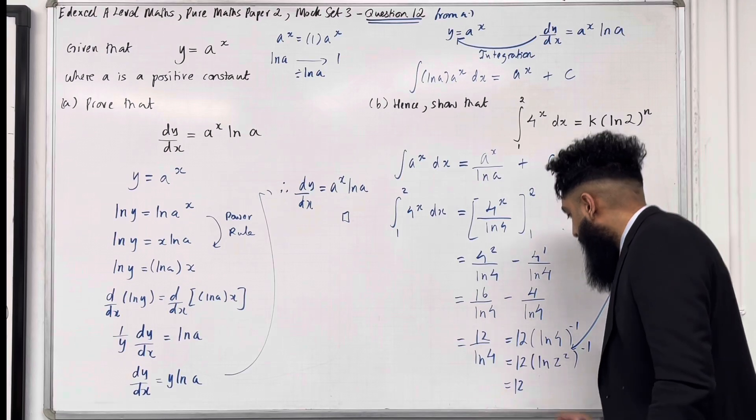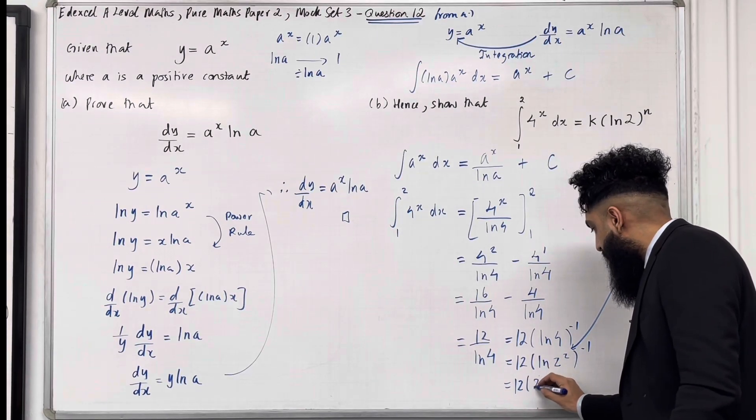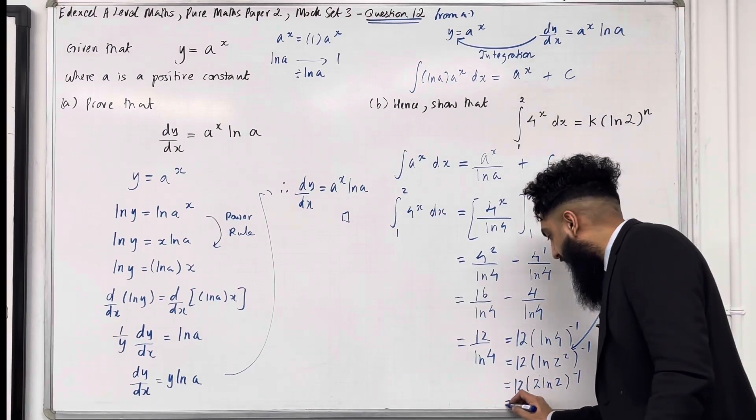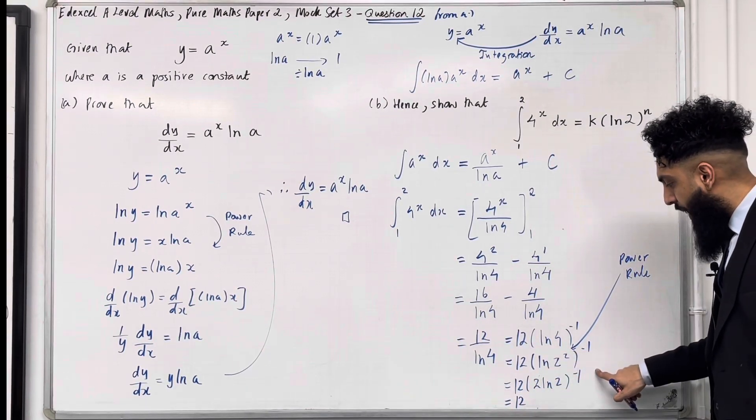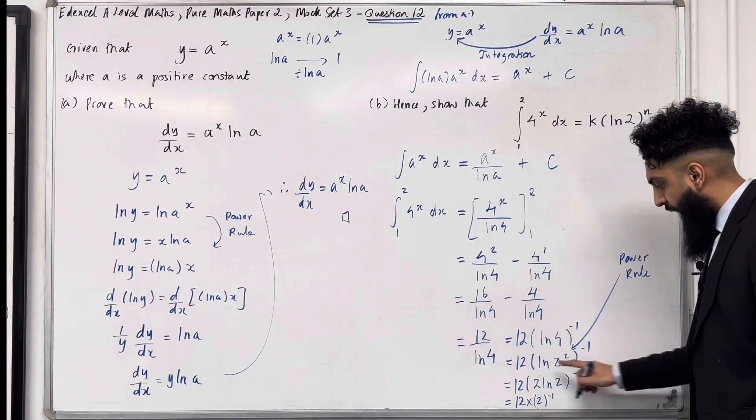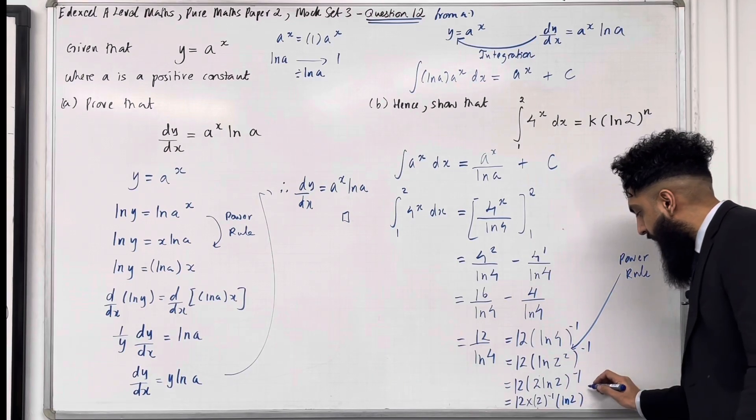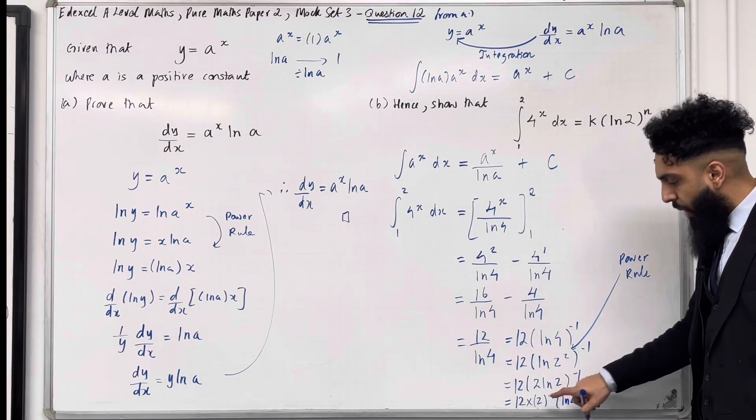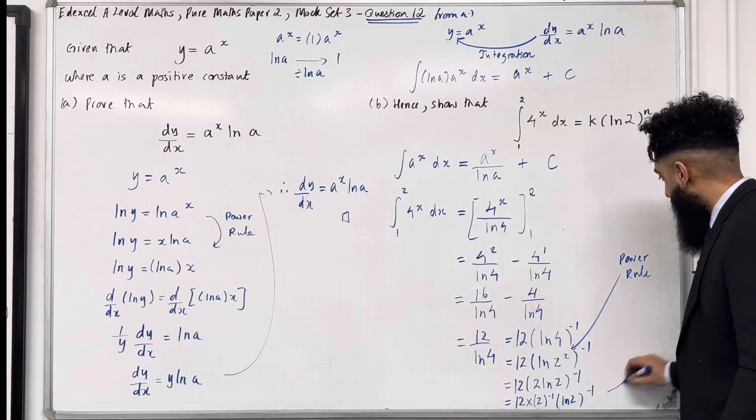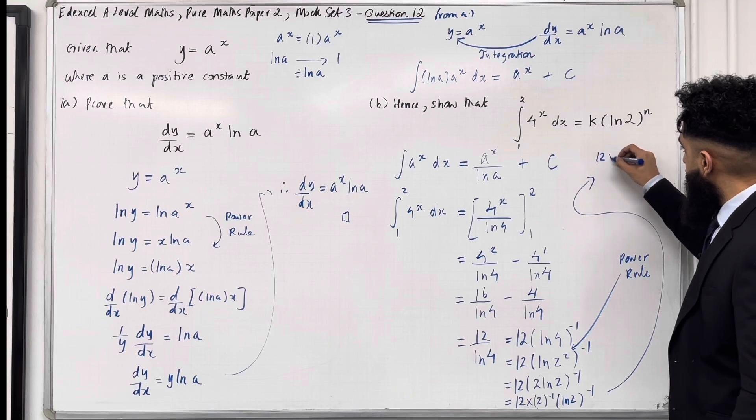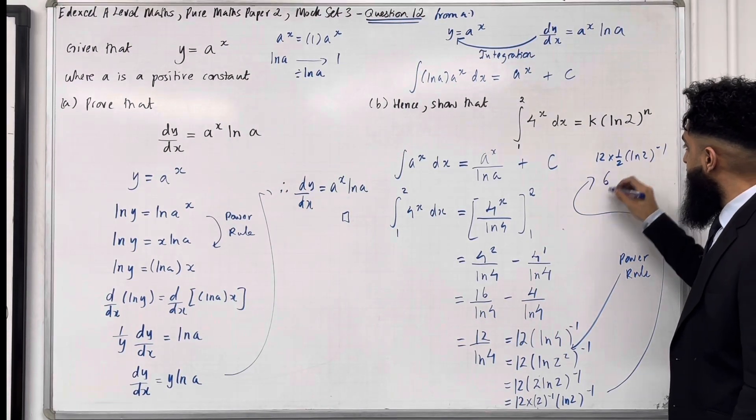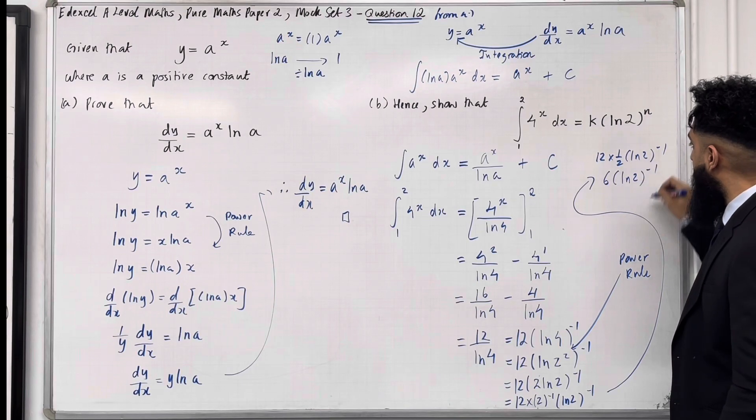So I've got 12, open bracket, 2 ln 2, close bracket to the power minus 1. Okay, so now what I can do is take 2, raise it to the power minus 1. So 12 multiplied by 2 to the power minus 1. And then take ln 2, raise it to the power minus 1. Now 2 to the power minus 1 is simply 1 over 2. 12 times 1 over 2, it's just going to be 6 ln 2 in brackets to the power minus 1.